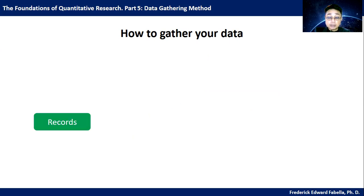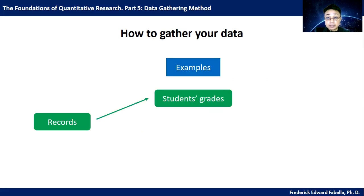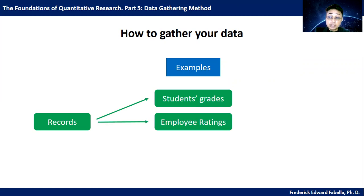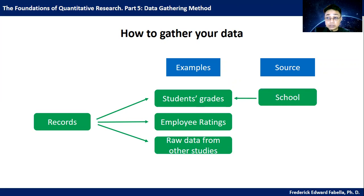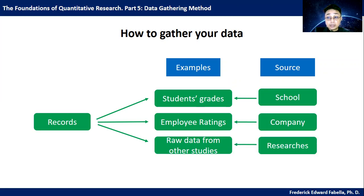How about records? There are different examples of records — you can have students' grades, employee ratings, or raw data from other studies. Each example will have a different source, so you need to go to the source. For example, students' grades will come from the school, employee ratings will come from the company, and raw data from other studies will come from researchers.